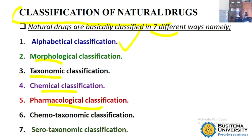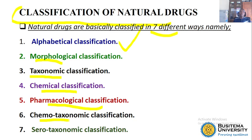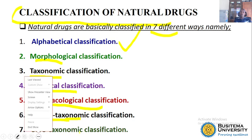We also classify drugs depending on their therapeutic importance, meaning we depend on their medicinal role — for example, we classify drugs that play similar therapeutic roles in one group. Then we have the sixth way, the chemo-taxonomic classification, where we combine the chemistry of the active ingredient and the taxonomy of that particular natural drug.